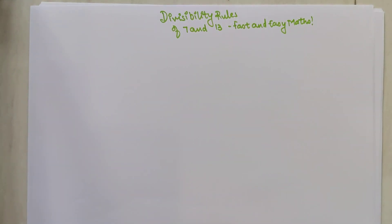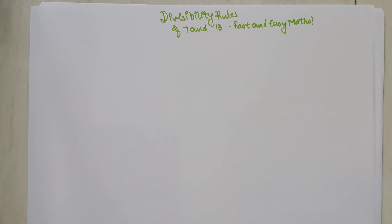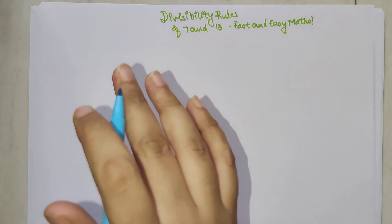Welcome everyone to my channel, Fast and Easy Maths, which is dedicated to giving you tips and tricks related to mathematics. Today I'm going to show you the divisibility rule of 7 and 13 in order to find the remainder. The actual rules are different, but what I'm going to show you today is a bit different — you're going to use this particular trick only to find the remainder.